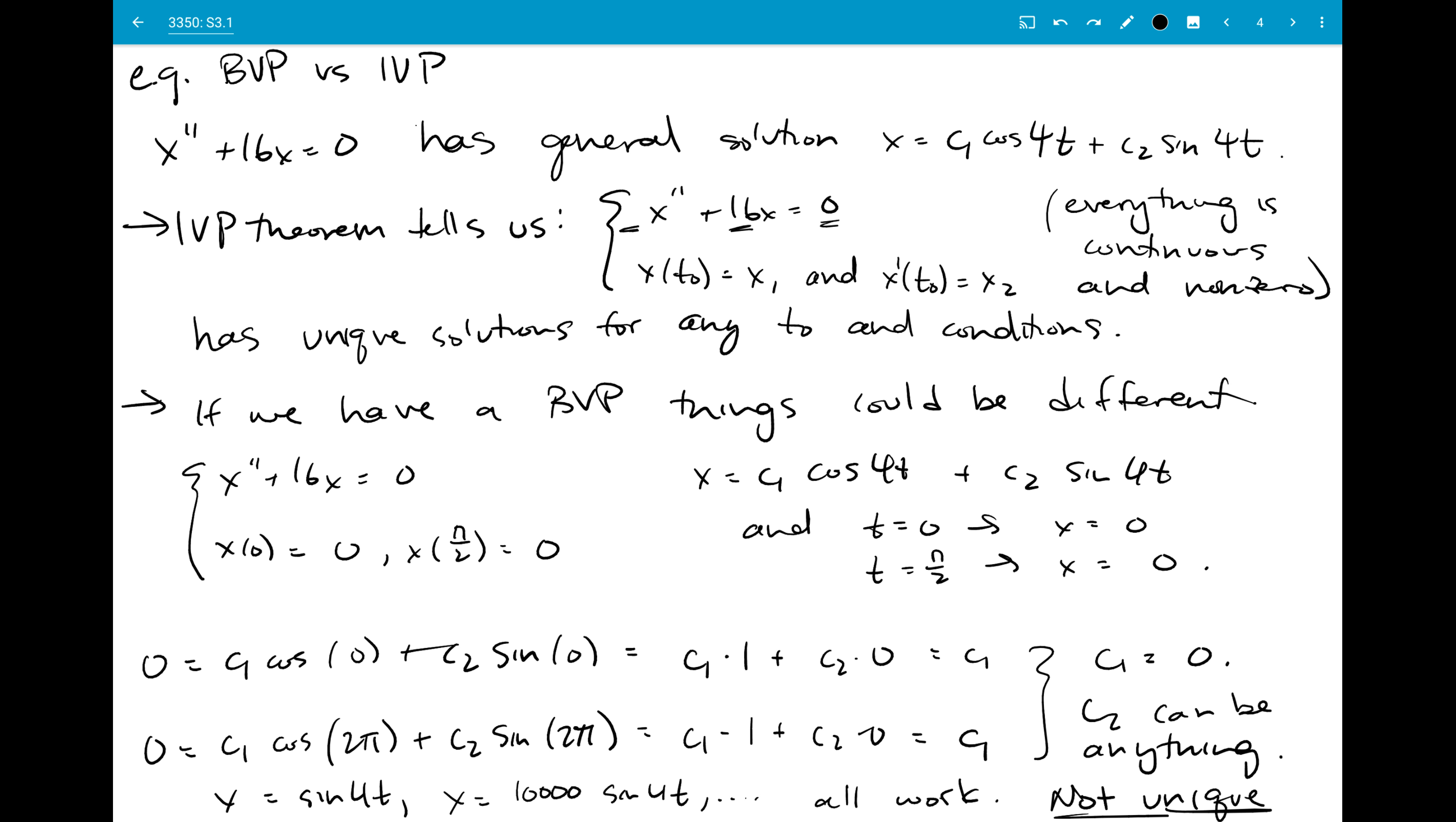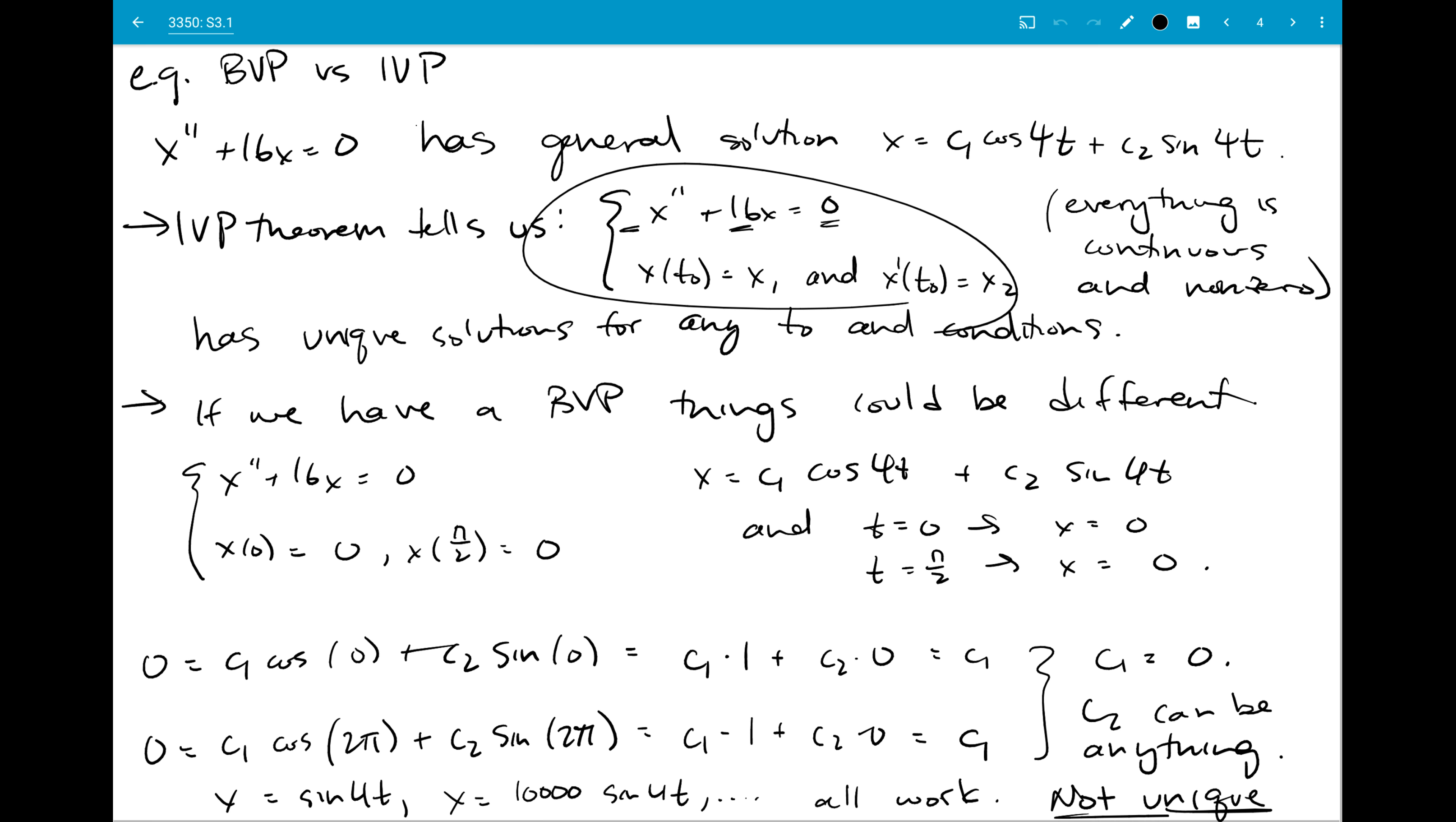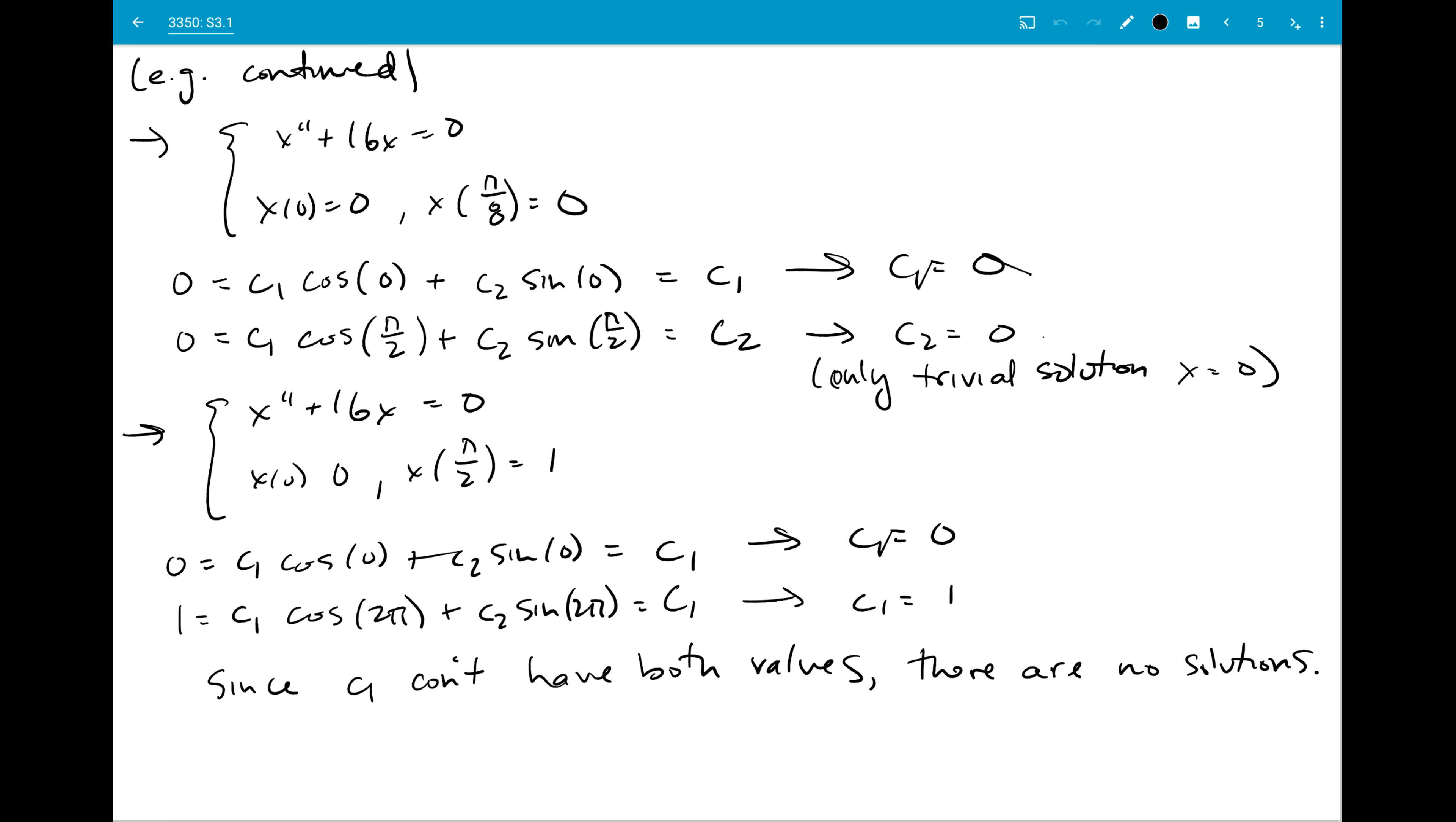So the point of this example was just to show us how a differential equation that's well behaved according to our initial value problem theorem, which is sort of the way that we've been thinking about what changes solutions in this class. If we're thinking about boundary value problems where you specify conditions at multiple points, then something that you would normally expect to have exactly one solution can have infinitely many solutions, only a trivial solution, or no solution. So boundary value problems can have infinitely many, no solution, or only trivial solutions, where initial value problems would have unique solutions.